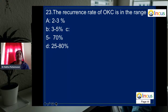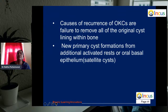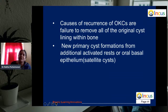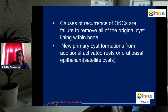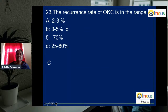Question 23: the recurrence rate of odontogenic keratocyst is the highest among odontogenic cysts — about 70%. The causes are failure to remove the original cyst lining, or new cyst formation from rests of dental lamina or oral basal epithelium. Recurrence can be prevented through peripheral osteotomy of the cavity or by chemical cauterization. The answer is 70%.